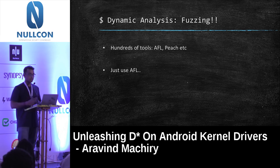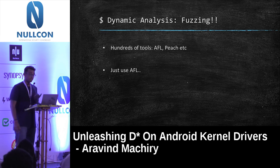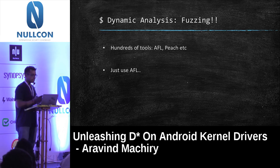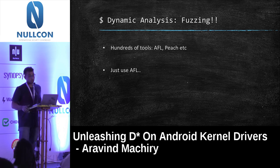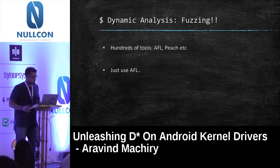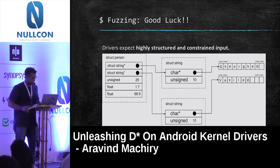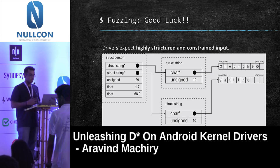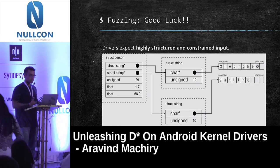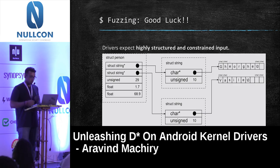The well-known dynamic analysis tool is fuzzing. There are tools like AFL and Peach — AFL has been shown to find bugs in libpng and even Chrome. So let's try AFL on kernel drivers. Good luck — because drivers expect highly structured and constrained input. The inputs must satisfy certain constraints with interdependencies between variables. AFL, being mutation-based, cannot understand these constraints and thus cannot reach deeper parts of the driver code.